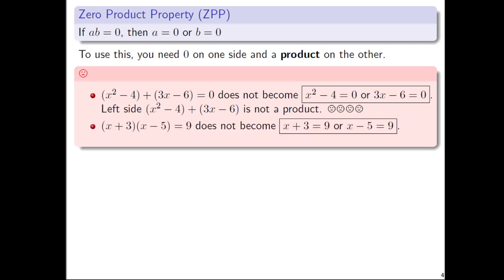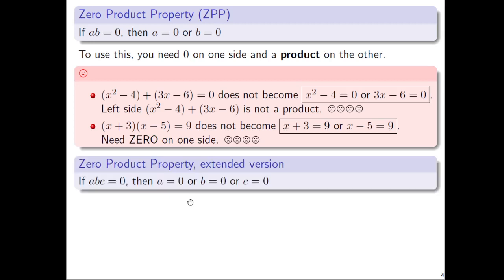If you had (x + 3)(x - 5) = 9, that does not become x + 3 = 9 or x - 5 = 9. Now you have a product on the left side, (x + 3)(x - 5), but the issue now is that the right side has the number 9 instead of the number 0. You need a 0 on one side. So really, zero product property - the word zero is important, the word product there is important.